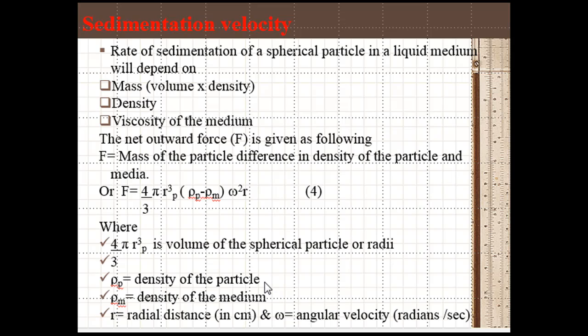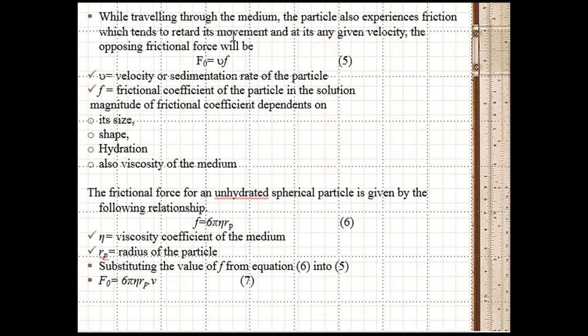ρₚ is the density of a particle, ρₘ is the density of the medium, R is the radial distance in centimeters, and ω is the angular velocity in radians per second. Traveling through the medium, the particle has to retard its movement at any given velocity. The opposing frictional force is given as F₀ = V × F, where V is the velocity of sedimentation rate of a particle and F is the frictional coefficient of the particle in solution.